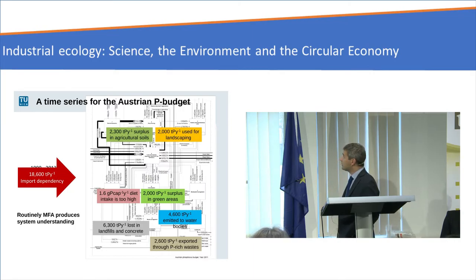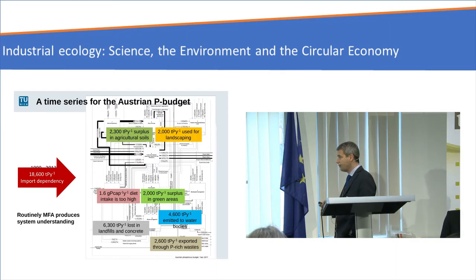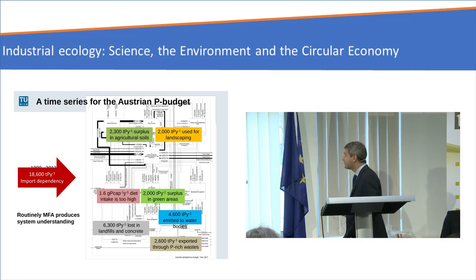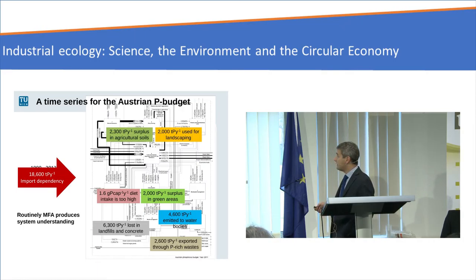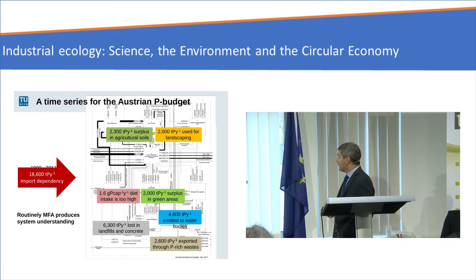Some key results are: we lost large amounts of phosphorus in agricultural soils because Austrian farmers are over-fertilizing. We use similar amounts of phosphorus for landscaping where it has no benefit. We eat too much — most of us eat too much. We have at least 2,000 tons of phosphorus that we lose in green areas such as public or private gardens. We lose even higher amounts in landfills and in concrete because sewage sludge and meat and bone meal are incinerated in cement kilns. We export a lot of phosphorus via phosphorus-rich wastes, and we emit phosphorus to water bodies. Austria is very much dependent on imports of phosphorus — we have no phosphorus reserves or deposits in Austria.